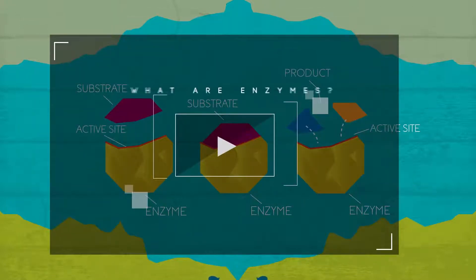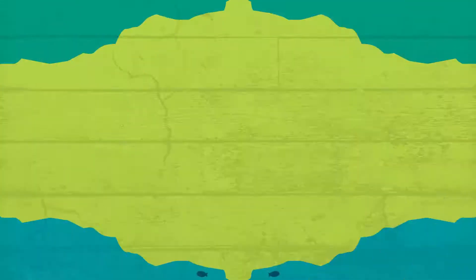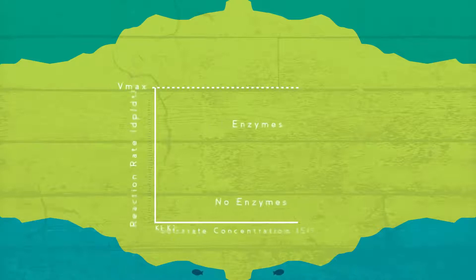Each enzyme has conditions under which it functions best - in other words, the point at which the rate of reaction is at its highest.